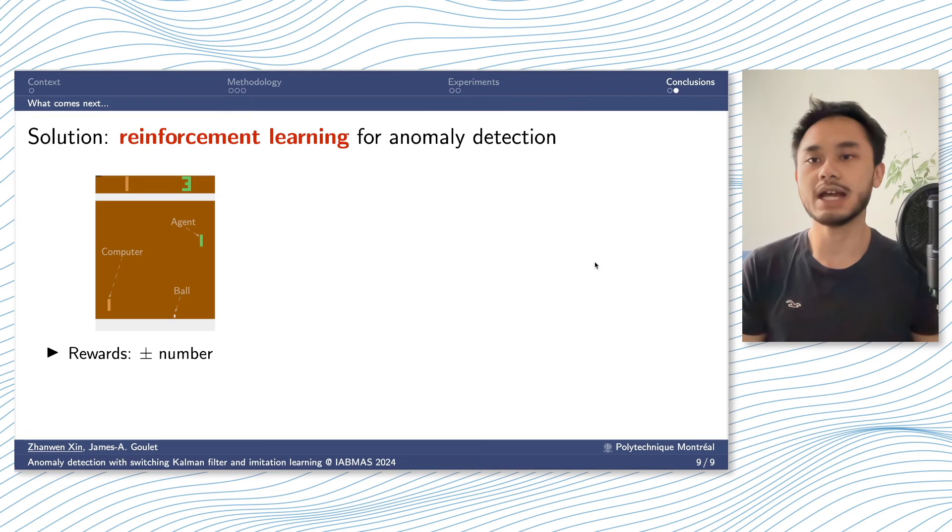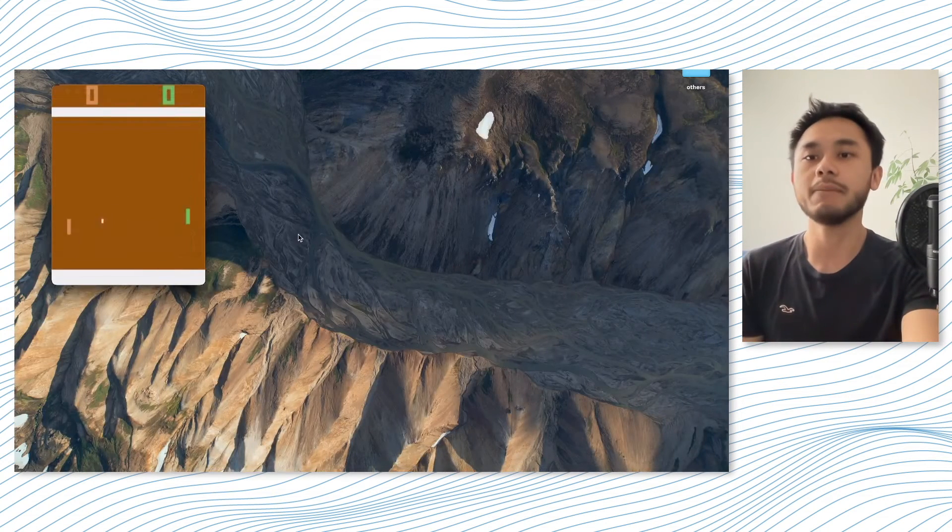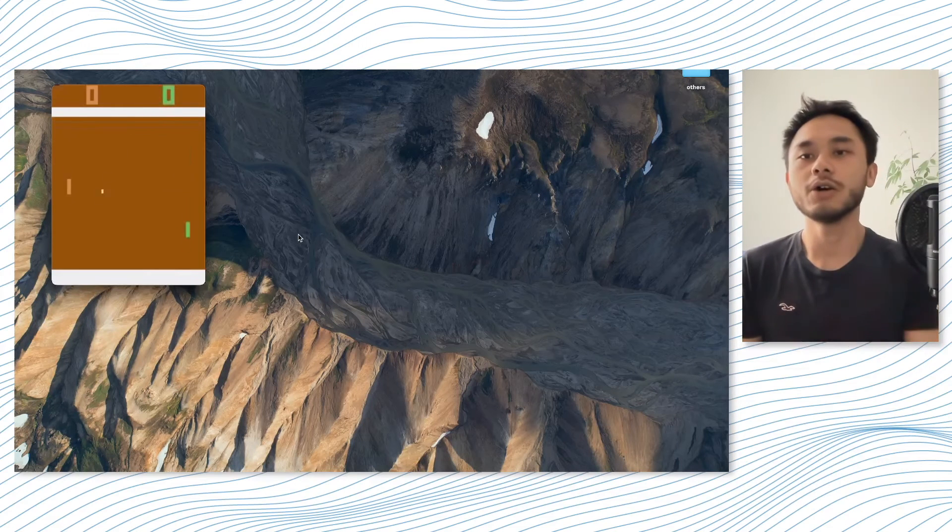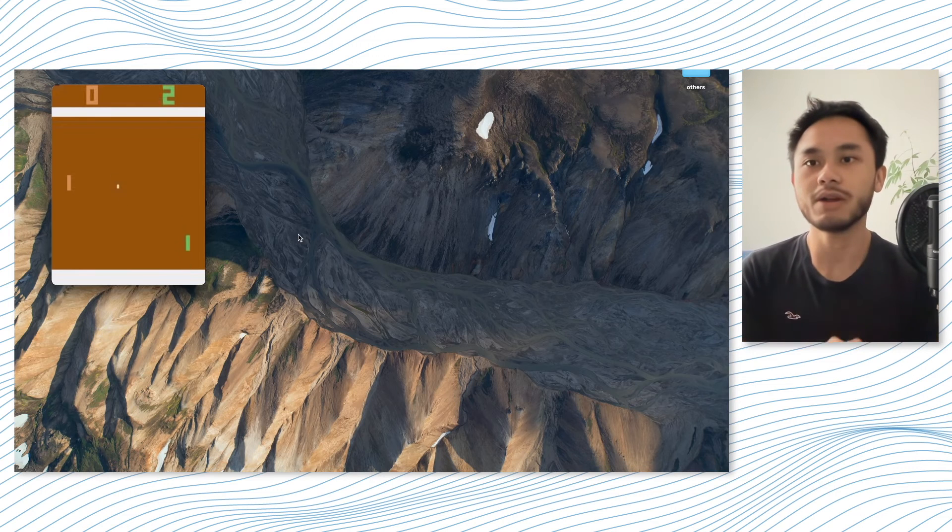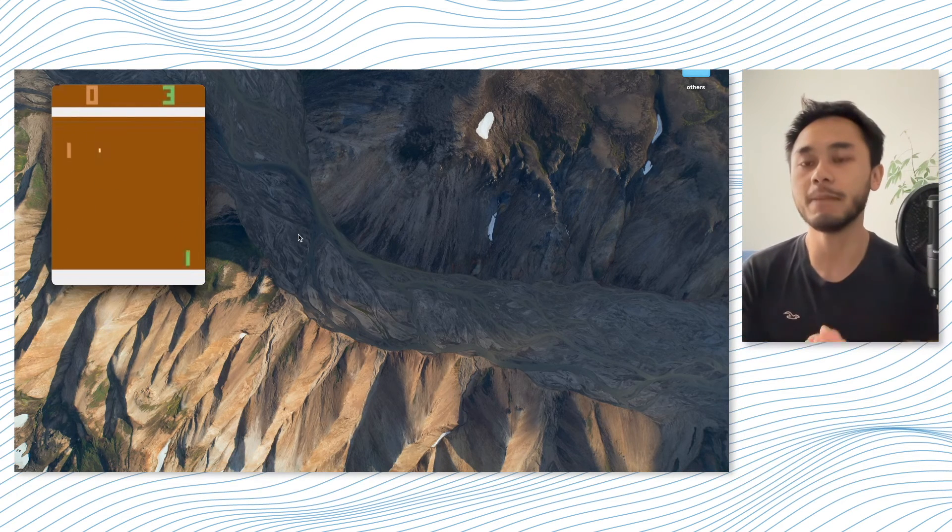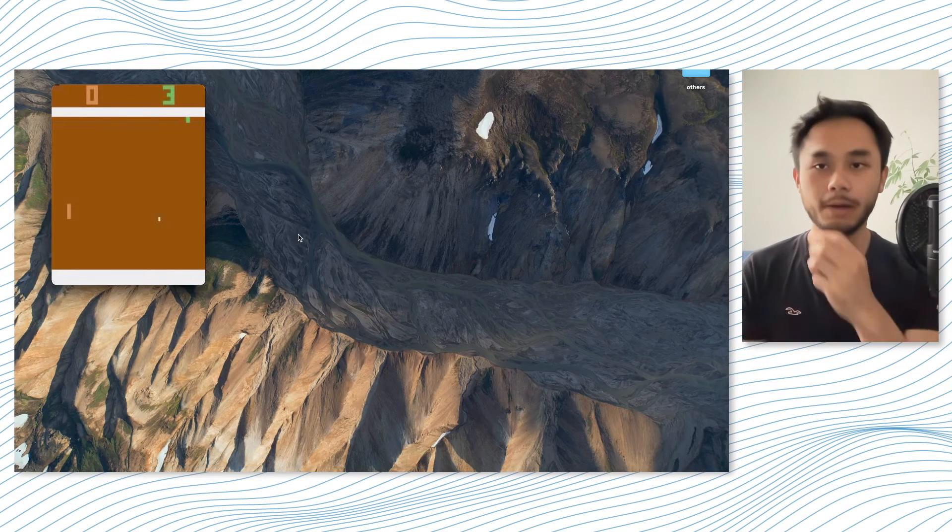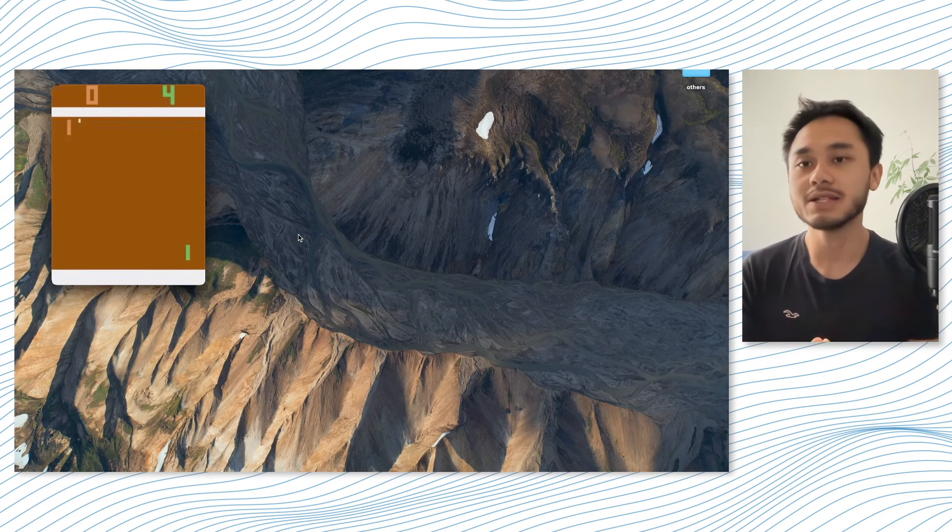So the next step for us is that we are now exploring to use reinforcement learning to train our anomaly detection agents. It has the potential to get rid of the labels because in reinforcement learning, it is a designed reward that drives the agents to learn. Here is one example in the Pong game. So the reward is designed as a positive or negative numerical number. When it catches the Pong, you get a plus one and when you miss it, it will get a minus one as punishment.